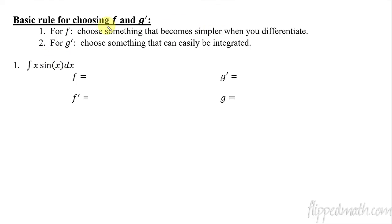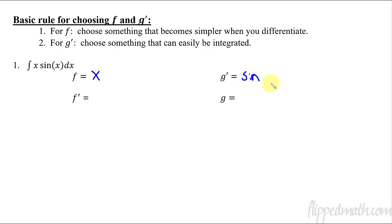Here are the strategies to think about. If you're choosing f, you want to choose something that becomes simpler when you take the derivative. For example, when I look at x and sine x, which one gets simpler with its derivative? The derivative of x is one. The derivative of sine x is cosine x — cosine x is not simpler than sine x, so that's not a good choice for f. x is a good choice for f. Then for g prime, you want something that can easily be integrated. The only other thing left is sine x, and the antiderivative of sine x is negative cosine x.